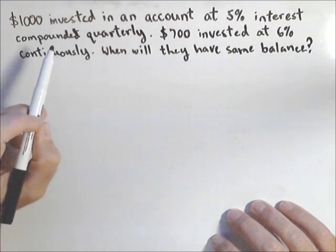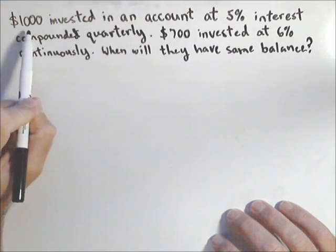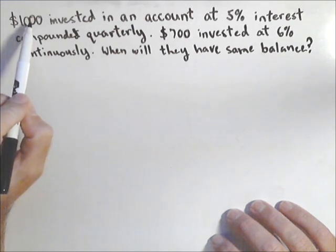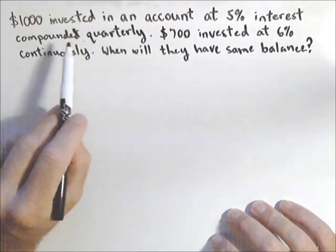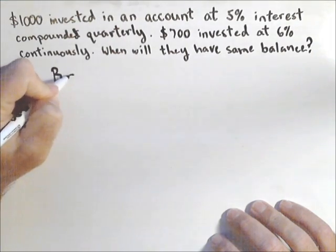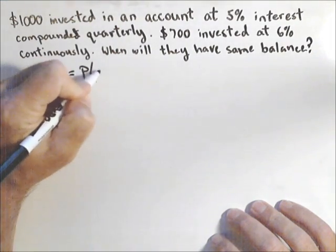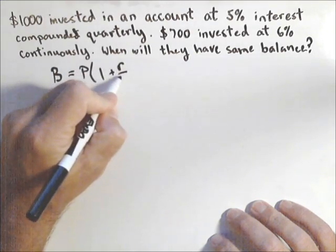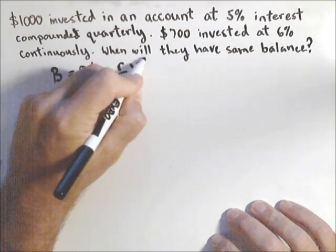Now, what we're going to need to do first is get an equation for each. So one of them is going to be a bank account that has $1,000 at 5% compounded quarterly. We're going to use this formula: B equals P times 1 plus R over N to the Nt.